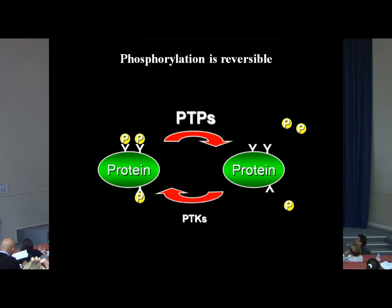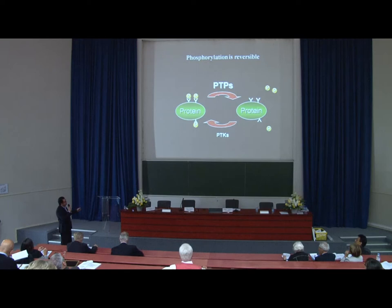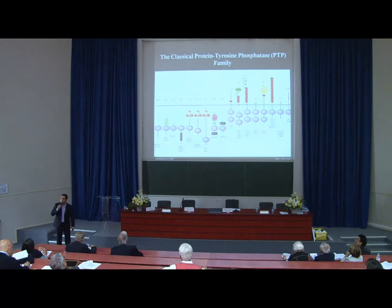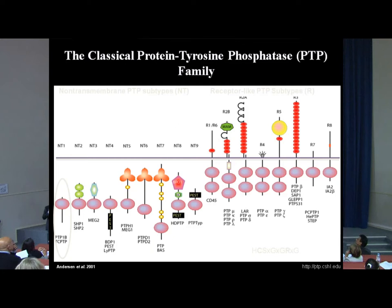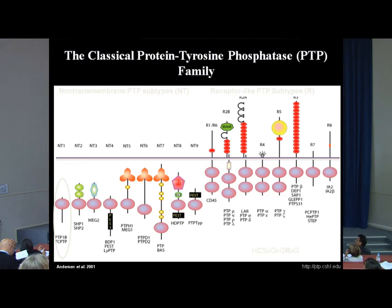We focus on the protein tyrosine phosphatases, and in humans there are 37 protein tyrosine phosphatases. One key mechanism for regulation of activity of all family members of the protein tyrosine phosphatases, as shown by Nick Tonks and several other groups, is oxidation. Reversible oxidation will inactivate the phosphatases, which is very important in the context of this meeting. Nitrosylation also regulates the activity of these phosphatases, and both oxidation and nitrosylation will reversibly inactivate them. After a while they are re-reduced, and this reduction will activate them again.